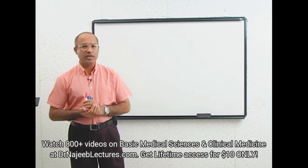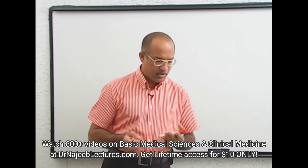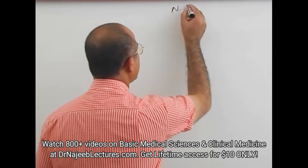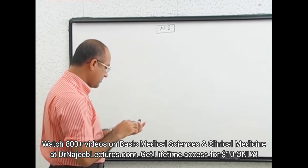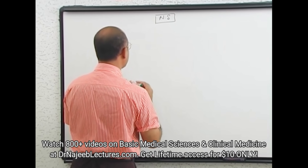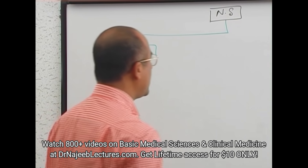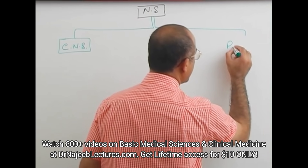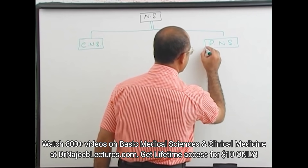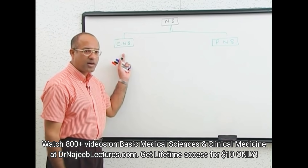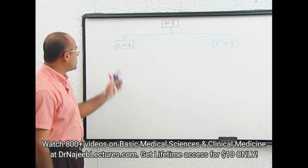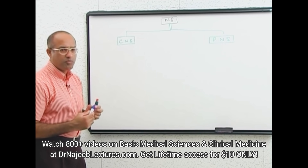Today we are starting with neuroanatomy — very basic concepts: what is the central nervous system, what is the peripheral nervous system, what is gray matter, what is white matter. The nervous system consists of two important components: number one is the central nervous system, and number two is the peripheral nervous system. The central nervous system consists of the brain and the spinal cord.